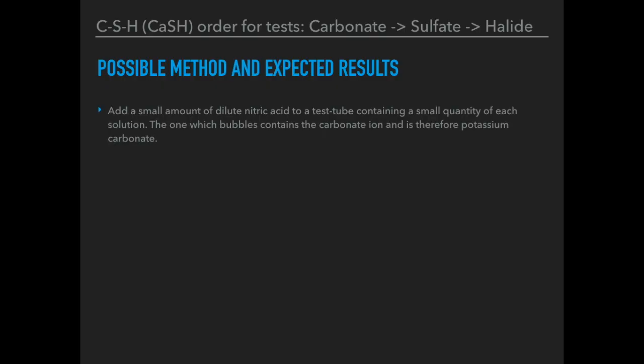The first step is to add a small amount of dilute nitric acid to a test tube containing small quantities of each of the five solutions. One of them is a carbonate, and the one which bubbles is the carbonate — it's the only one that will react with dilute acid. Nitric acid is used specifically to avoid introducing chloride or sulphate ions that could interfere with later tests. The only one that bubbles must contain the carbonate ion, so that must be potassium carbonate.